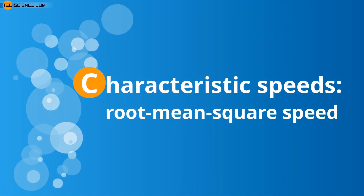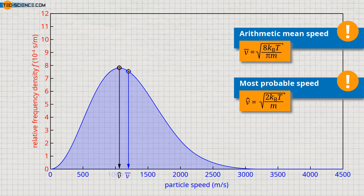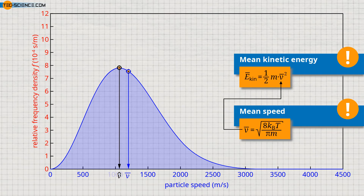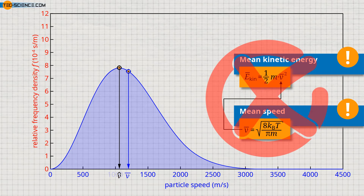Characteristic Speeds — Root Mean Square Speed. In thermodynamics, one is usually not so much interested in the speeds of the molecules, but rather in the kinetic energies, since these are directly linked to the temperature. One might think that the mean kinetic energy of a gas molecule can be determined directly from the arithmetic mean speed. However, this is not true, because the kinetic energy is influenced by the square of the speeds. Thus, high speeds have a disproportionately large effect on kinetic energy. For example, a speed twice as high does not mean a kinetic energy twice as high, but four times as high.